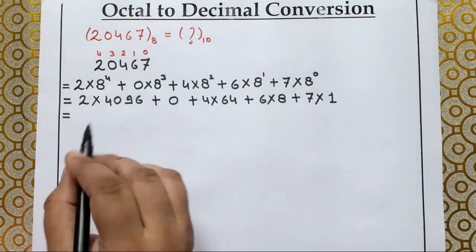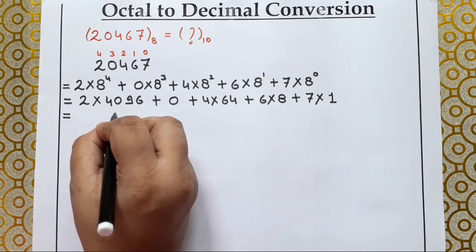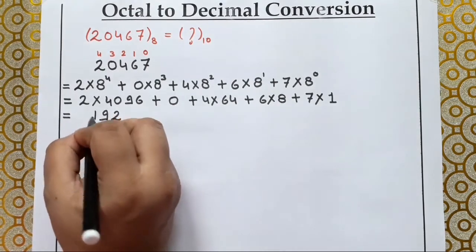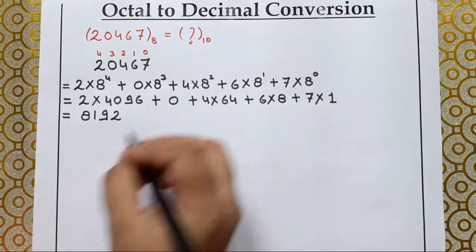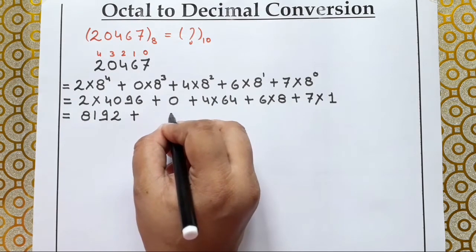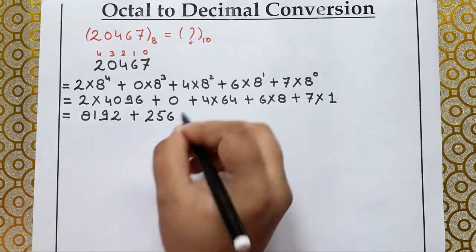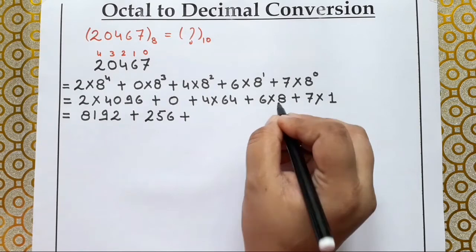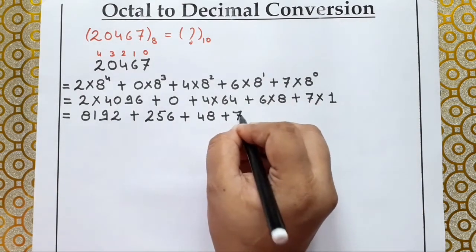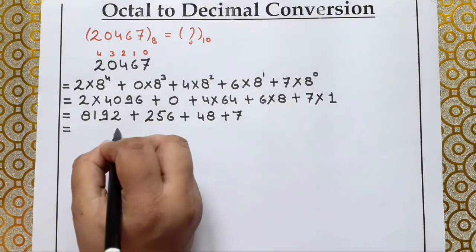Plus 6 × 8, plus 7 × 8⁰ which equals 1. Now multiplying: 4096 × 2 = 2918 (8192 effectively), plus 0, plus 4 × 64 = 256 (written as 652 in working), plus 6 × 8 = 48, plus 7 × 1 = 7. Now we add all these numbers.